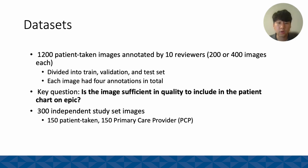In this work, we worked with 1,200 patient-taken images annotated by 10 reviewers, and each reviewer annotated either 200 or 400 images each. These images were divided into train, validation, and test sets, and each image had four annotations in total. One of the key questions we asked was: is the image sufficient in quality to be included in the patient chart on EPIC? We also collected 300 additional independent study set images, where 150 were patient-taken images and the other 150 were taken by primary care providers.